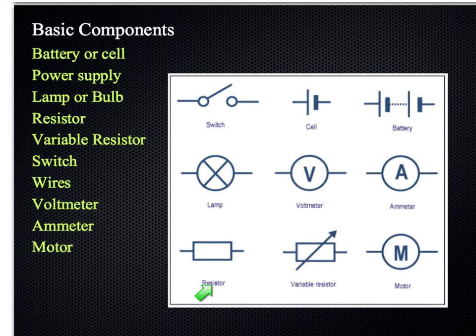The resistor, this is the newer symbol. There is an older symbol which looks a bit like this. You'll sometimes see that one in older textbooks certainly. Then the variable resistor, so you have this arrow going across it that indicates that the resistance can be changed. And the motor symbol.